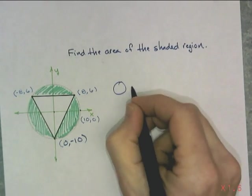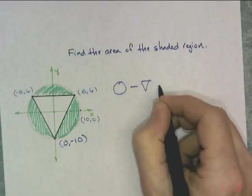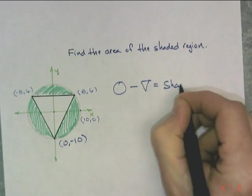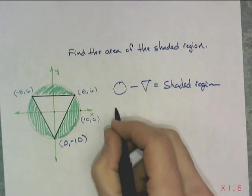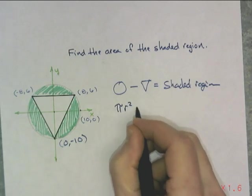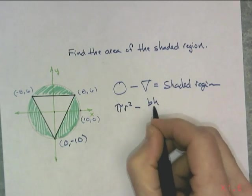All right, so circle minus triangle equals shaded region. I like doing a picture. Circle, we need πr². Triangle, we need base times height divided by 2.